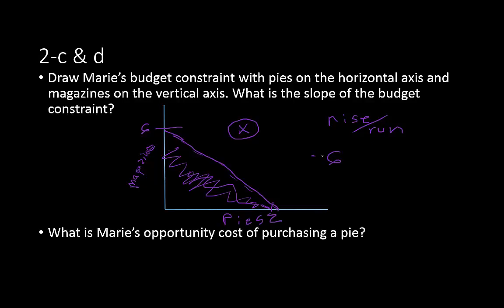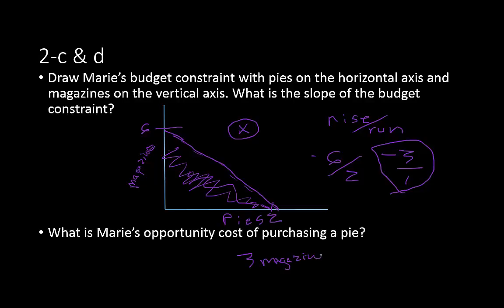The slope of Marie's budget line is rise over run: −6 over 2, which equals −3. Any combination on or inside this line is attainable; anything outside is unattainable given her budget. The opportunity cost of purchasing one pie is 3 magazines — that is, buying one pie means giving up 3 magazines.